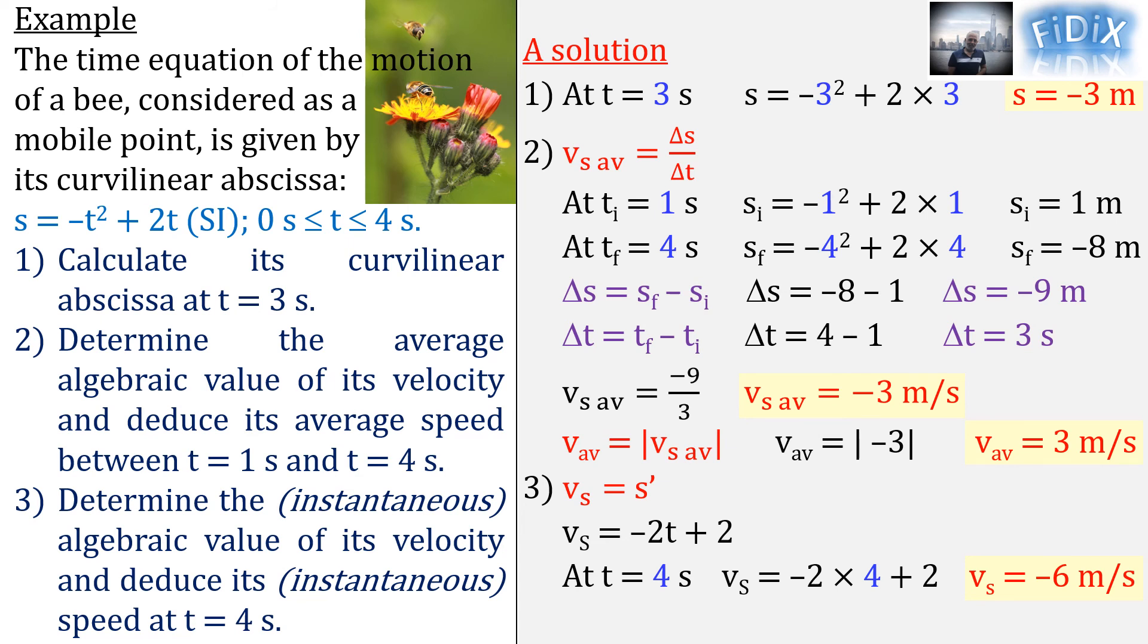Note that the negative sign for v_s means that at this instant, the bee is moving in the negative direction. And, as we just said before, the speed is the magnitude of the velocity, thus v is the absolute value of v_s. The instantaneous speed is equal to 6 meters per second in this case.